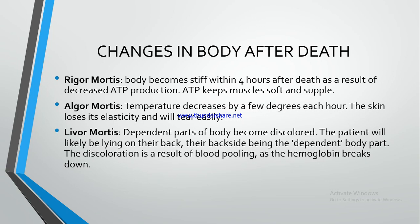Algor mortis. Temperature decreases by a few degrees each hour. The skin loses its elasticity and will tear easily. So algor mortis me kya hota hai? Temperature body ka bahut zyada kam ho jata hai, aur temperature kam honne ki wajah se skin ki jo elasticity hoti hai, woh khatam ho jati hai, aur woh easily tear hone lagti hai.